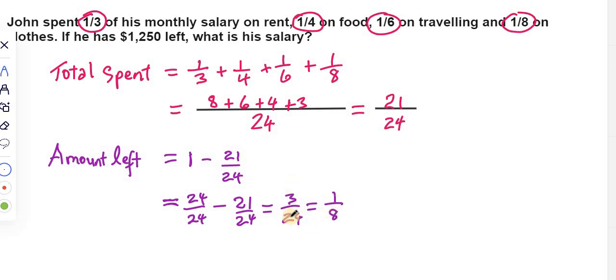Because 3 in 3 goes once, and 3 goes into 24 eight times. So 1/8 is equivalent to that same amount we're talking about, which is $1,250. That's the amount he has left in terms of money. And in terms of fraction, he has 1/8 of his salary remaining.